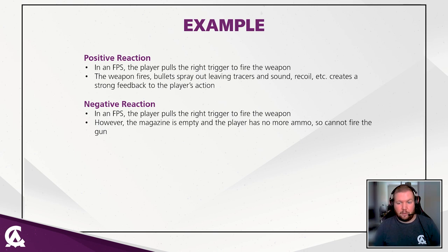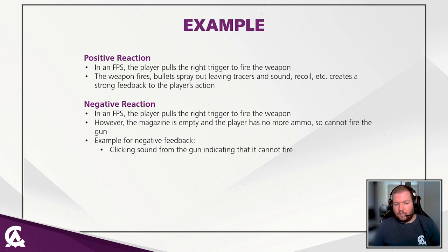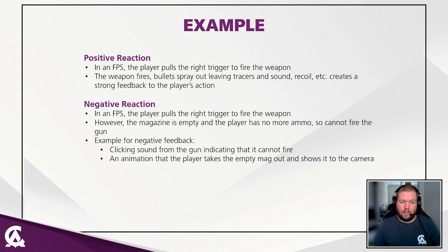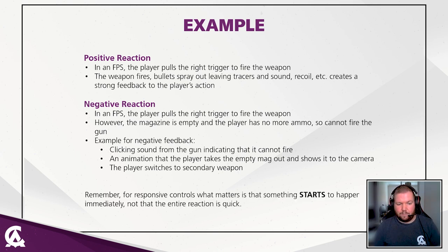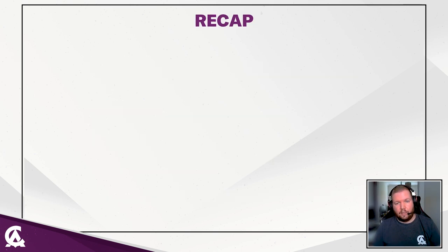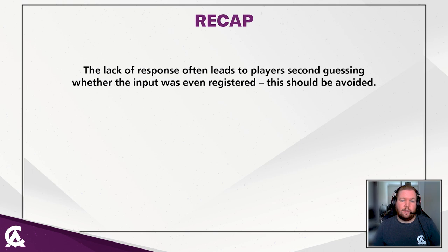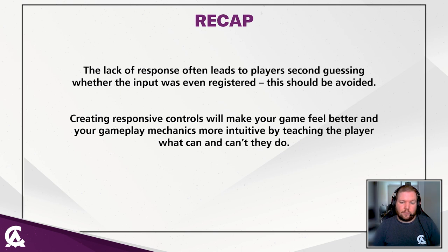For a negative reaction: that same situation, but the magazine is empty and the player has no ammo. Examples of negative feedback include a clicking sound from the gun indicating it can't fire, an animation where the player shows the empty mag to the camera, or the player automatically switching to a secondary weapon if there is one. Remember: what matters for responsive controls is that something starts to happen immediately — not that the entire reaction is quick. Lack of response often leads to players second-guessing whether the input was registered or if there's a bug, and this should be completely avoided.